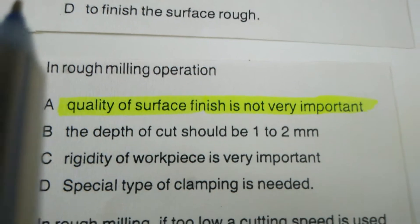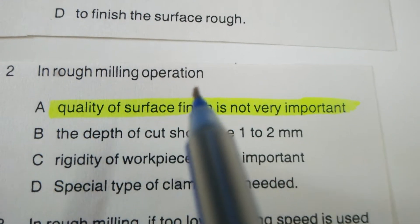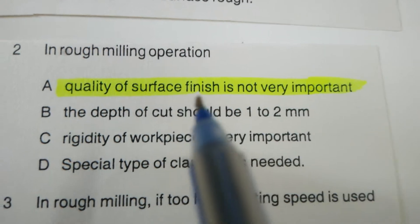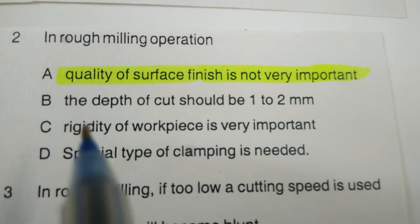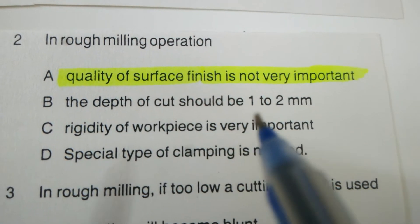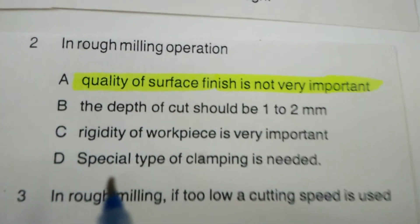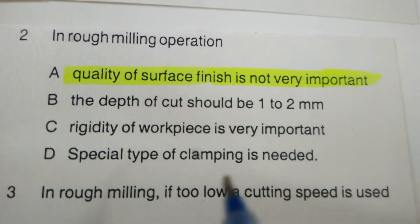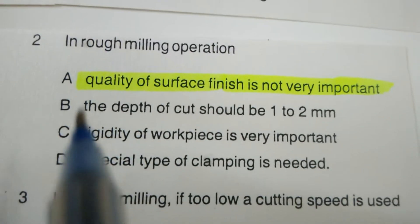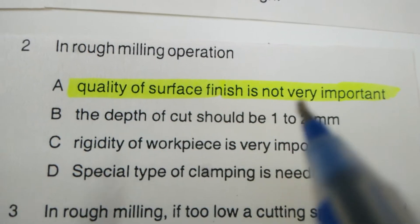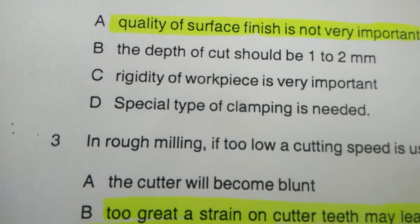Next question: In a rough milling operation — quality of surface finish is not very important, the depth of cut should be 1 to 2 mm, rigidity of the work is very important, or special type of clamping is needed? The correct answer is quality of surface finish is not very important.